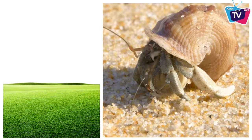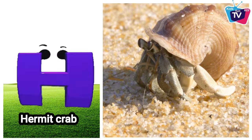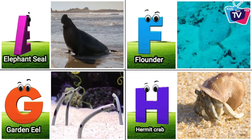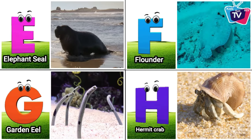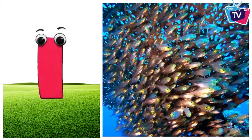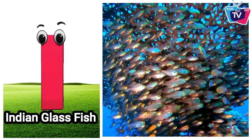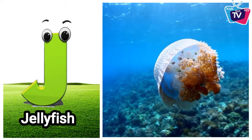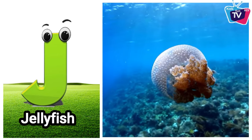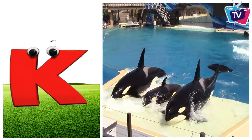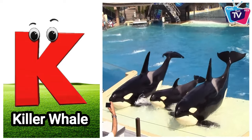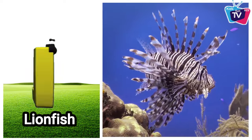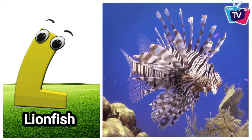H is for hermit crab, hermit crab. I is for Indian glass fish, Indian glass fish. J is for jellyfish, jellyfish. K is for killer whale, killer whale. L is for lionfish, lionfish.